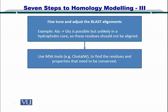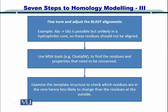You can use multiple sequence alignment tools such as ClustalW to find residues and properties that need to be conserved. By looking at conserved properties, you can make sure that amino acids giving rise to those properties are conserved and therefore not substituted. Lastly, you examine the template structure to check which residues are in the core — hence less likely to change — than residues on the surface. The surface amino acids evolve and are substituted more frequently compared to those in the core.